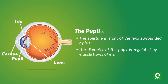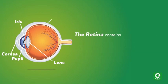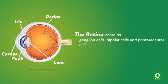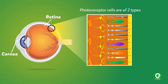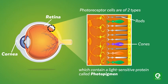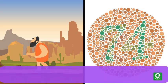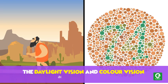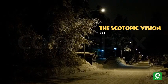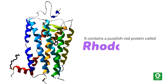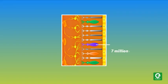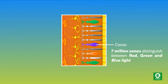The diameter of the pupil is regulated by the muscle fibers of the iris. The retina contains ganglion cells, bipolar cells, and photoreceptor cells. Photoreceptor cells are of two types: rods and cones, which contain a light-sensitive protein called photopigments. Daylight vision and color vision are functions of cones, while scotopic vision is the function of rods. Rods contain a purplish-red protein called rhodopsin. Seven million cones distinguish between red, green, and blue light, while 125 million rods in the retina are sensitive to low light.